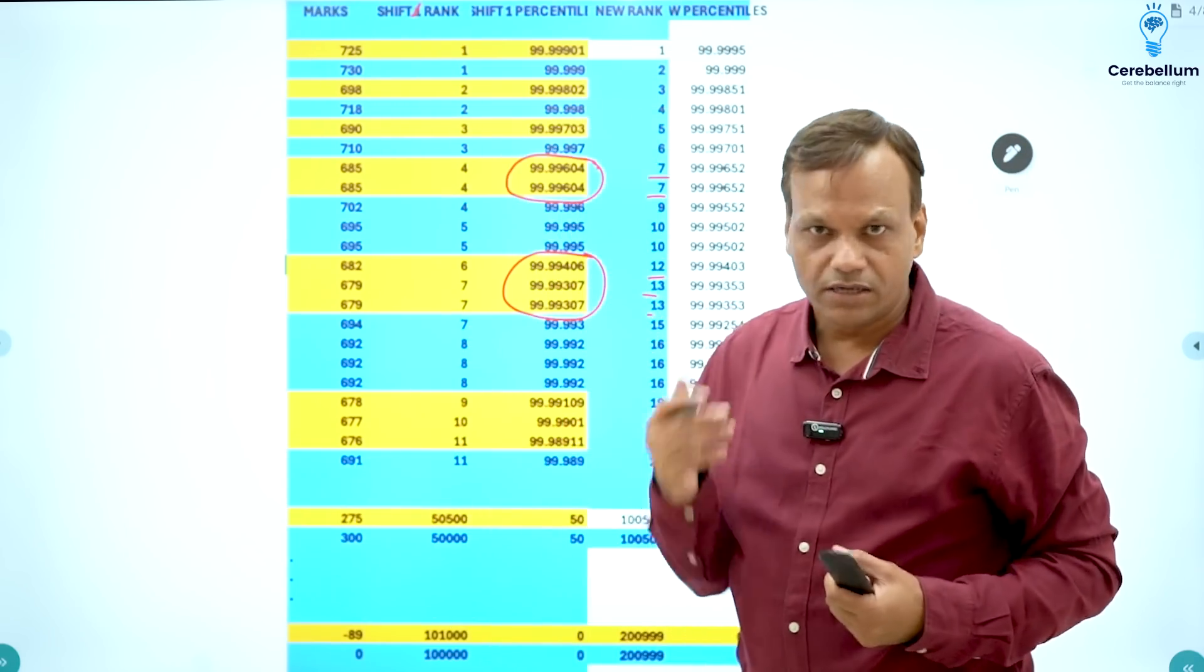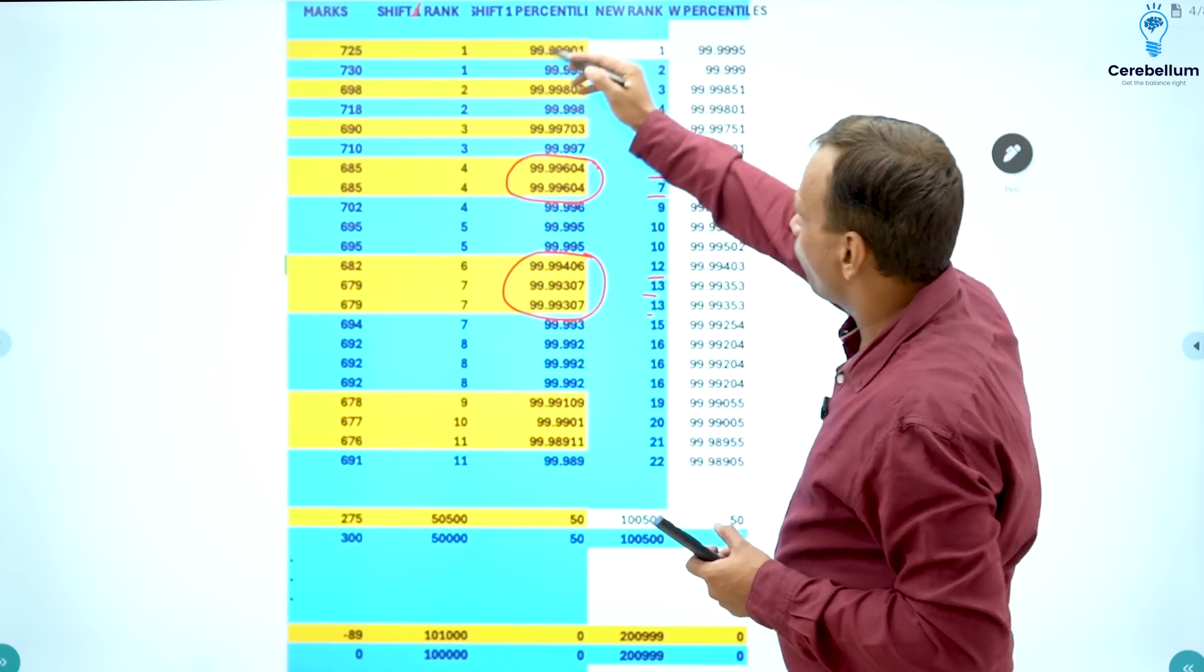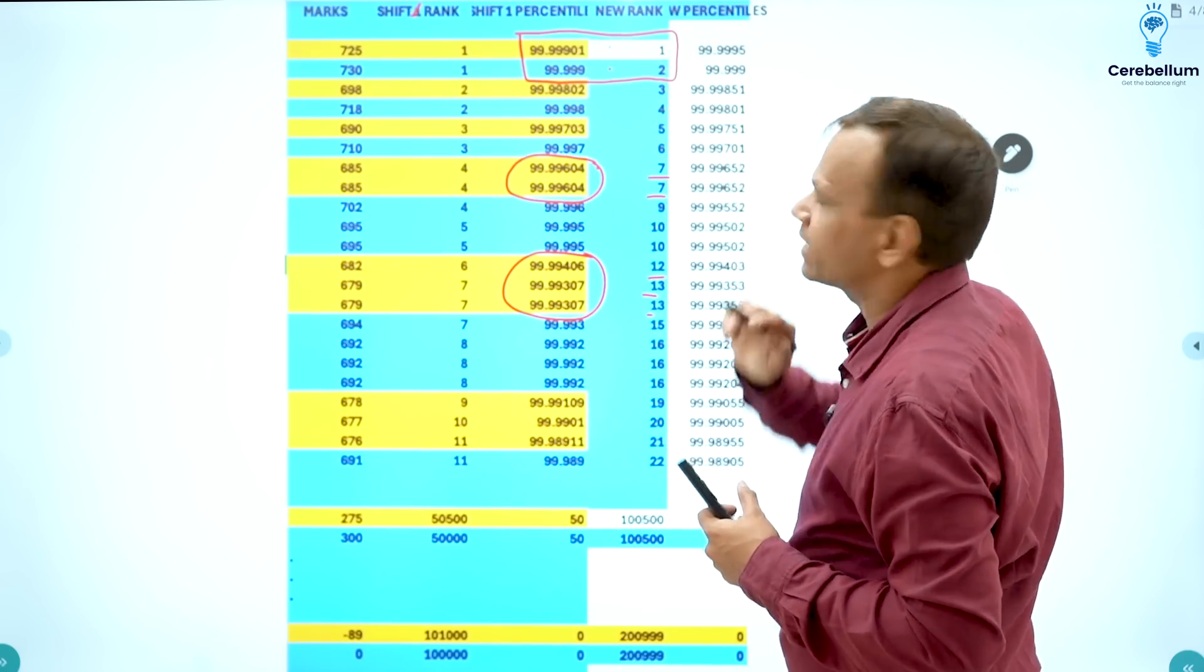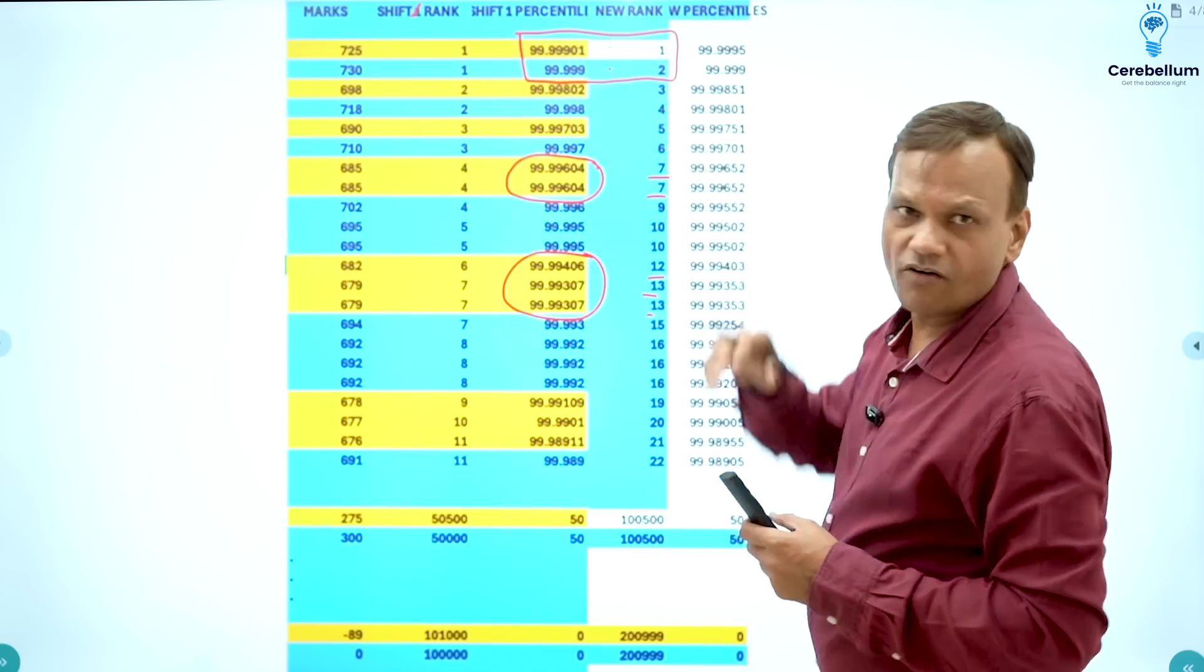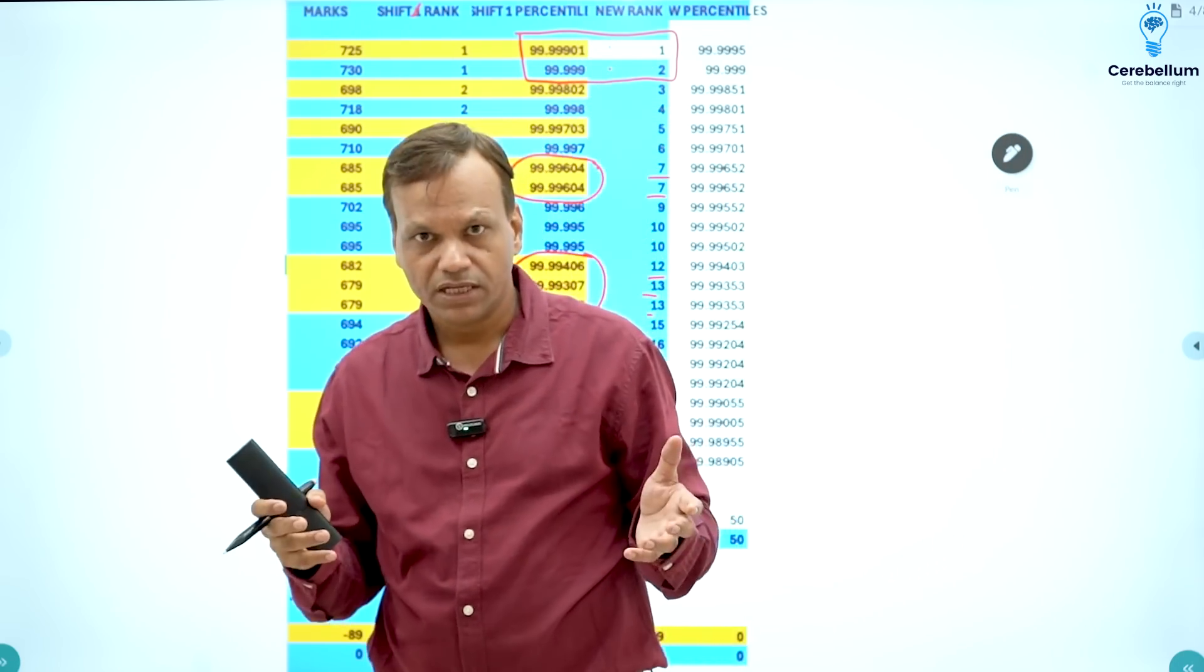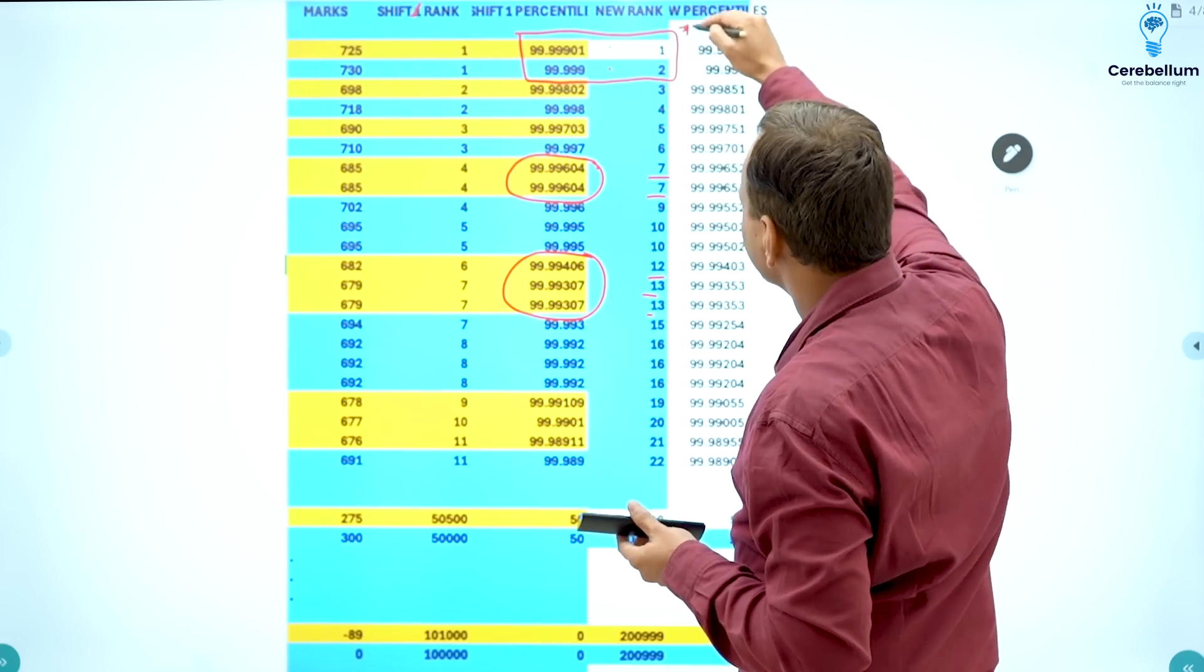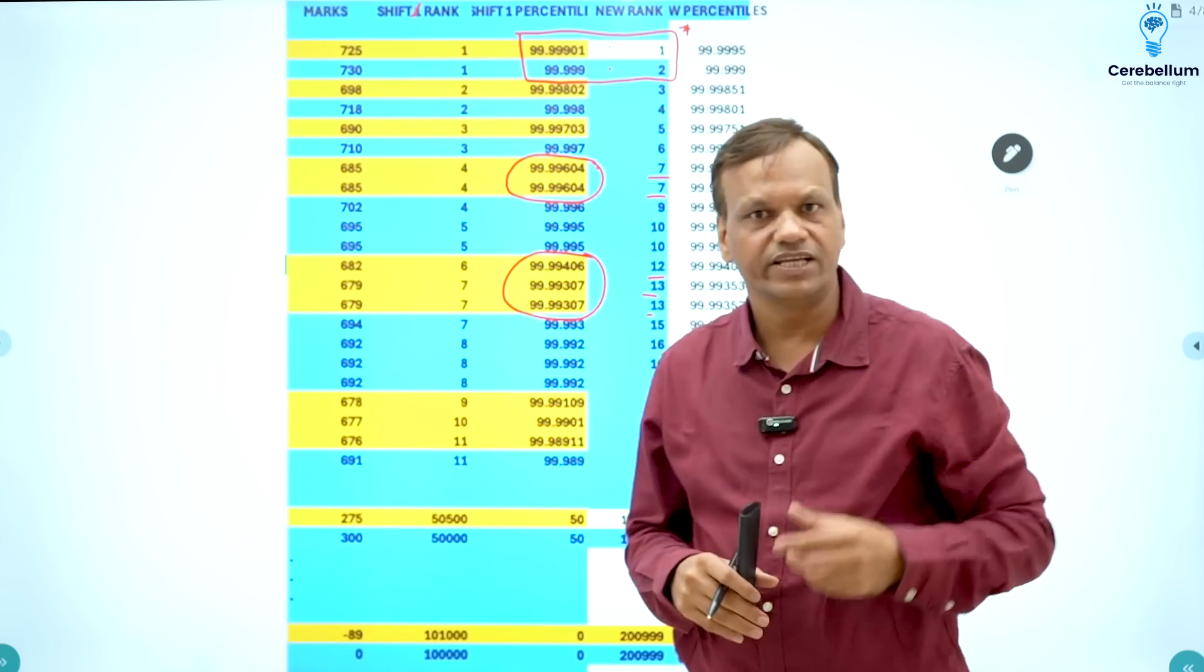Now the important question which students are going to ask, and I am also in dilemma, is that both of them have got rank 1 in their respective shift. But this is getting rank 1 and this is getting rank 2. So this is obviously wrong because the percentile of rank 1 will be higher if more number of students have appeared. If lesser number of students appeared, the percentile obviously will be slightly lesser. So how they will tackle this I don't know, but this will be the problem only with the top 1 or 2 ranks only. Most of the students will not feel this problem.